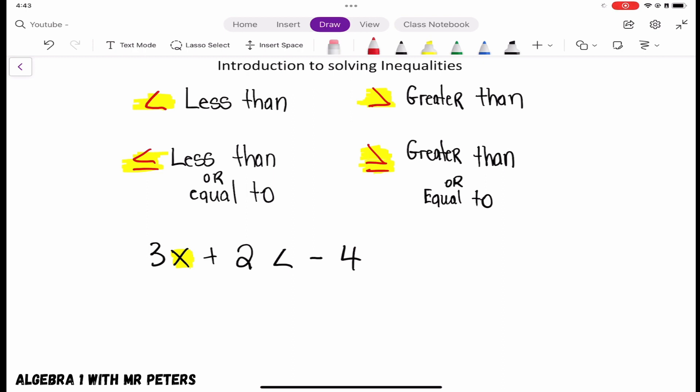So I'm going to want to move that positive 2 over to the other side of the inequality symbol using the same steps, inverse operations to solve.